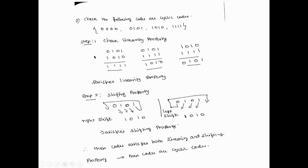The second step is the shifting property. Neglecting 0000, we take the second term 0101 and shift it one position to the right. The result is 1010, which is part of the given set of input codes. Then taking the same value and doing a left shift, the result is again 1010, which is also part of the input code set. You can take all remaining values and check similarly. Whether you do a right shift or a left shift by one bit or two bits, once it is satisfied for one code it will be applicable for all.